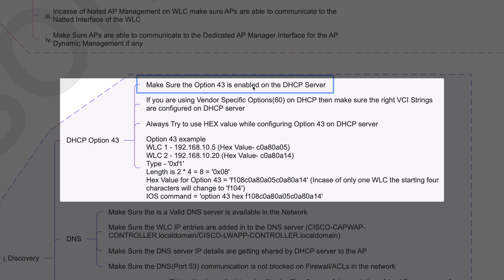If you are using vendor-specific options, the VCI string is what I'm referring to. For example, if you have a specific AP model that needs to join one specific controller due to hardware or software limitations, you have to use Option 60, which provides that controller IP address only to those AP models. You can find the VCI string for each AP model on the Cisco site. I already have another video showing how to do CAPWAP discovery VCI string mapping.